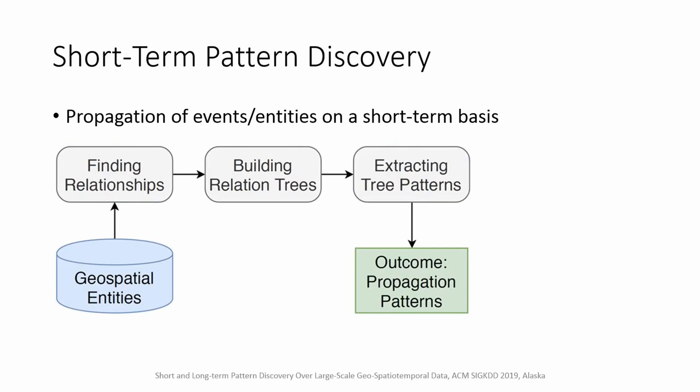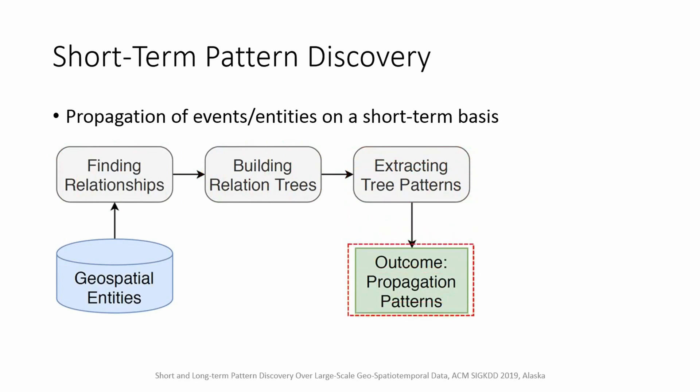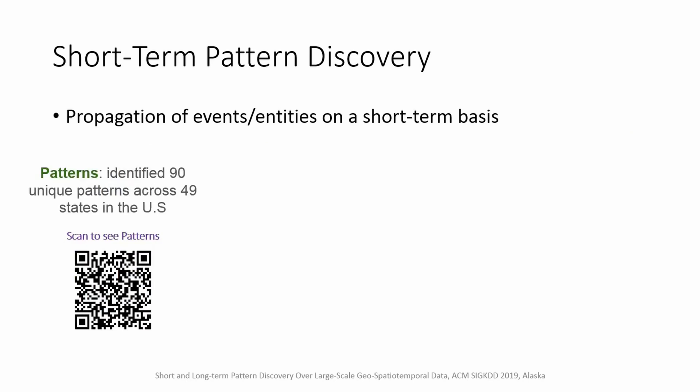We propose a new process for short-term pattern discovery. This process provides a specific definition of weak dependency between each two geospatiotemporal entities. Then, it creates relation trees and extracts tree patterns which are representative of propagation patterns. One example is a rain event which causes a traffic congestion and a traffic accident, and the accident further causes another congestion. By employing this process, we extracted 90 unique propagation patterns of traffic and weather events over the United States.